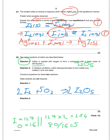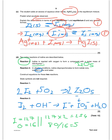This next question is slightly more difficult. Does I₂ disproportionate in alkaline conditions? I₂ plus OH⁻ gives iodide ions I⁻ plus iodate(V) ions IO₃⁻ plus H₂O. It's IO₃⁻ because iodine is in oxidation state +5 as iodate(V), and you need 3 oxygens to give an overall minus charge.